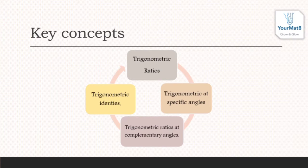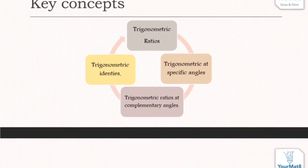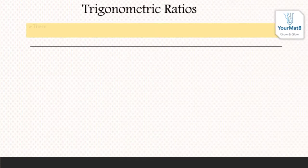Now let us see trigonometric ratios in detail. There are six trigonometric ratios: sine, cosine, tangent, cotangent, secant, and cosecant.